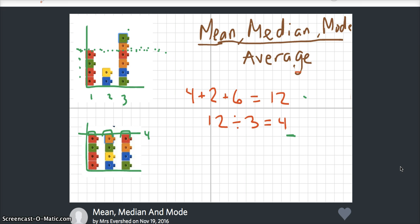So our mean average, we are going to take the sum of all the data, and then we're going to divide by how many numbers that we're using.